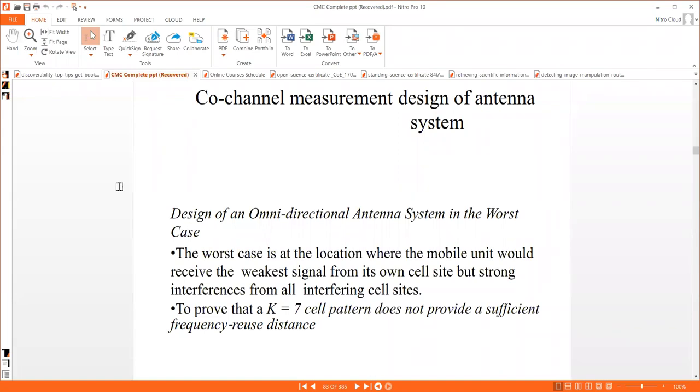The main thing we have to prove is that the K equals 7 cell pattern, which we discussed so many times, does not provide sufficient frequency reuse distance. This seven cell pattern is not mandatory to give us the best frequency reuse.